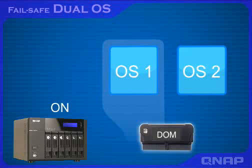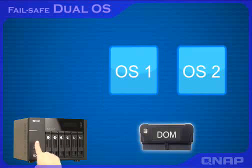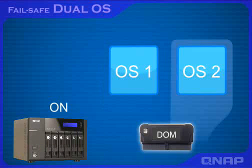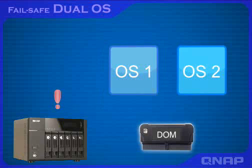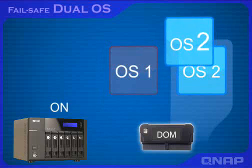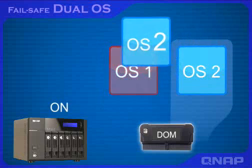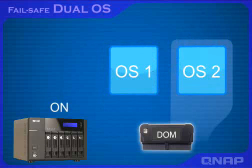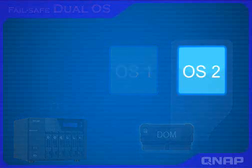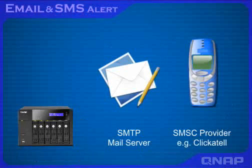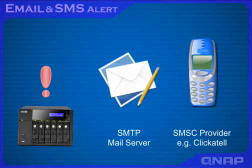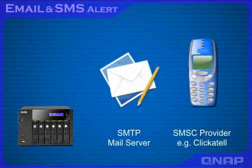Two operating systems are built on the DOM for alternative system booting upon every startup. If one fails, the other will be used to boot the NAS, and the failed OS is recovered from the healthy one. The SMS and email alert feature enables you to receive real-time SMS or email notifications when there is a system error or warning.